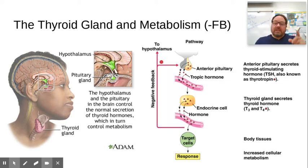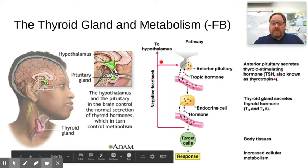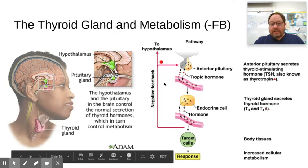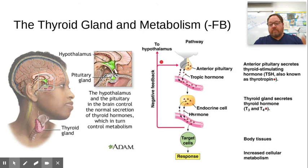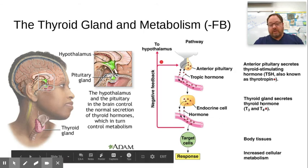This is an example of negative feedback. The T3 and T4 hormones — also called thyroxin — will actually inhibit the pituitary from releasing more TSH. This prevents the overproduction of T3 and T4, so the body doesn't overheat.